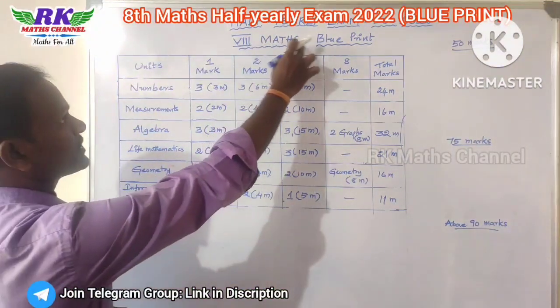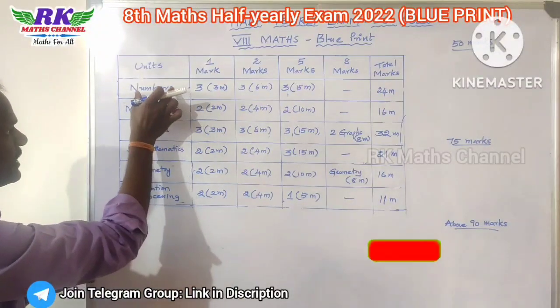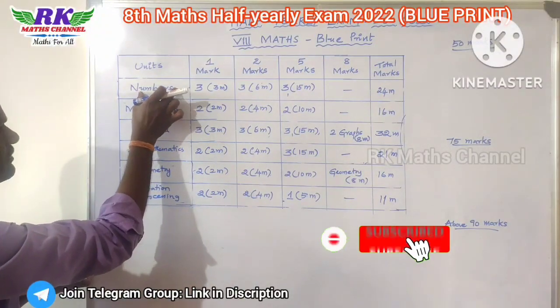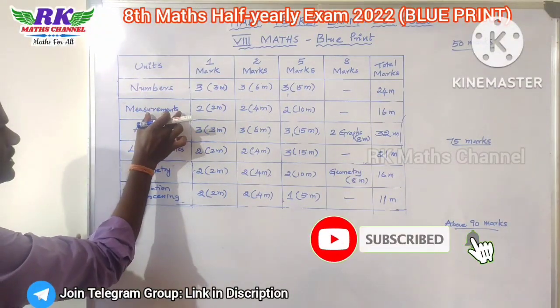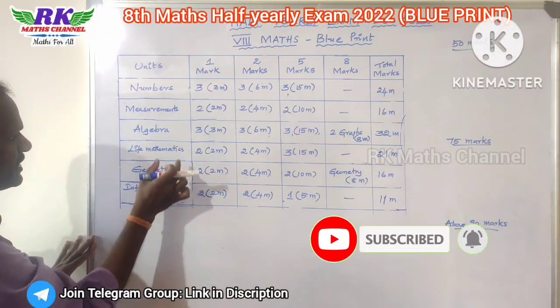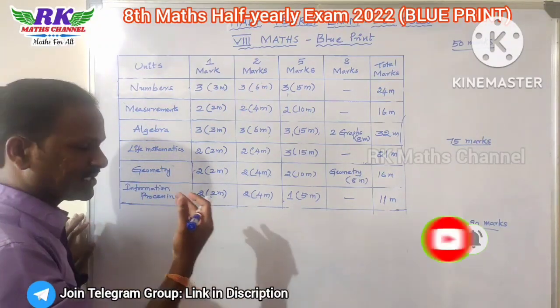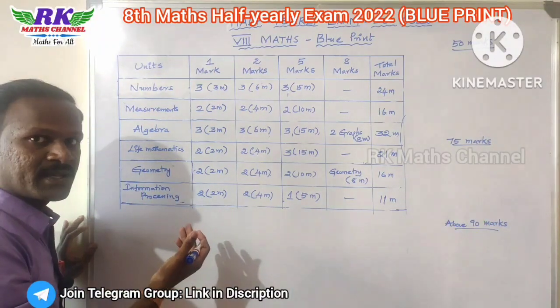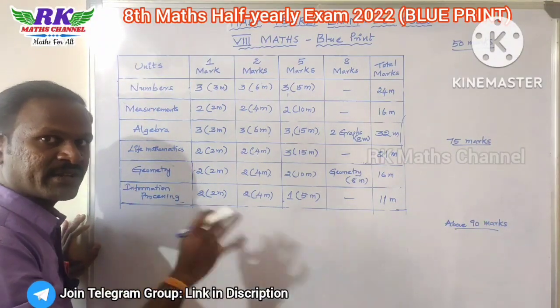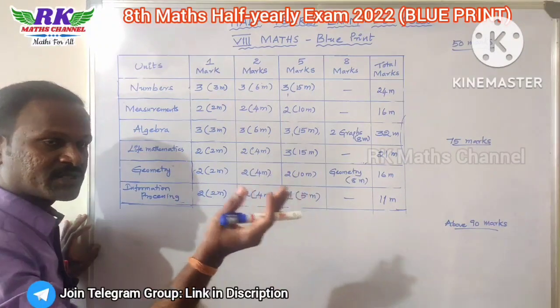In this class, we will look at the Maths Blueprint. Let's see the syllabus. First chapter: Numbers. Second chapter: Measurements. Then Algebra, Life Mathematics, Geometry. The sixth unit is not required. That is the general syllabus.